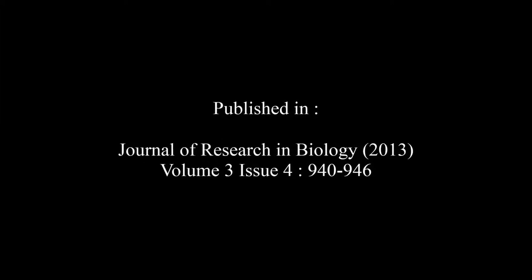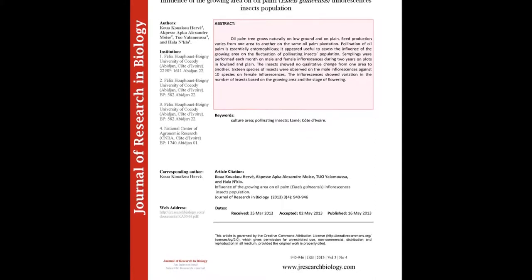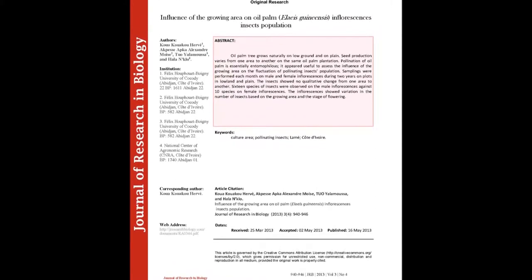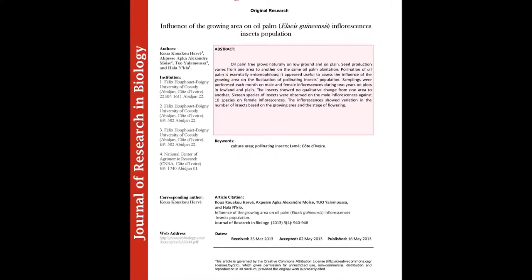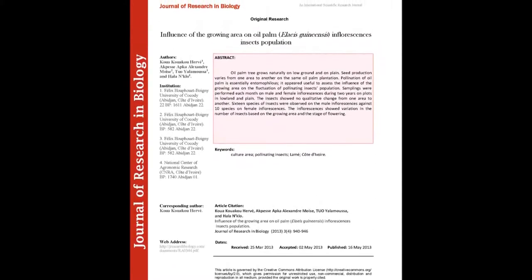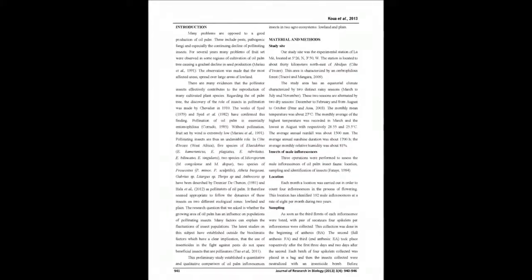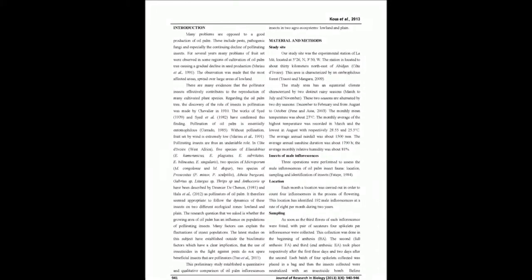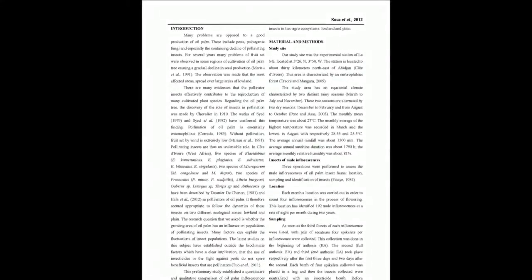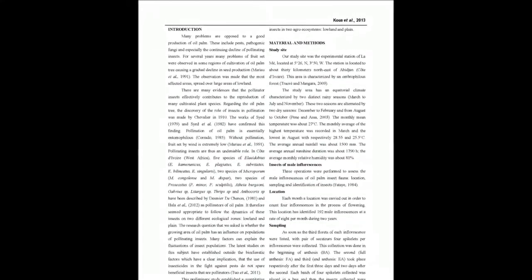The summary of this article goes as follows. Oil-palm trees grow naturally on low ground and on plains. Seed production varies from one area to another on the same oil-palm plantation. Pollination of oil-palm is essentially entomophilous, but it appeared useful to assess the influence of the growing area on the fluctuation of pollinating insects' population.